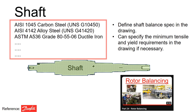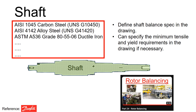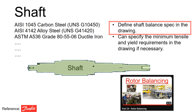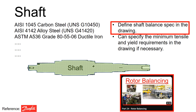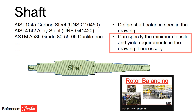Selection of material largely depends on the engineering decisions. It is also important to specify the shaft balance specification in the drawing — you could find more details in the part 24 video on rotor balancing. In certain cases, you may also need to outline the minimum tensile and yield requirement in the drawing.